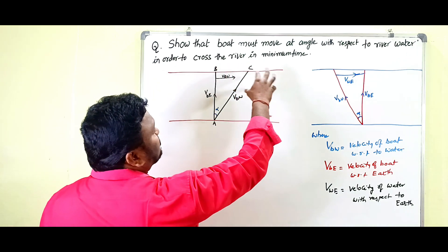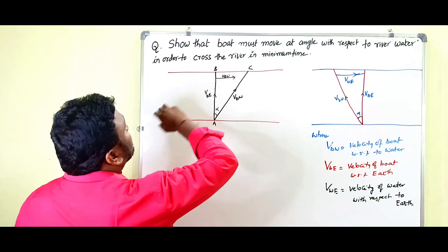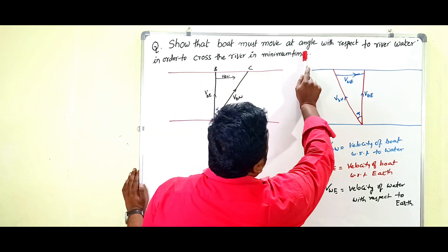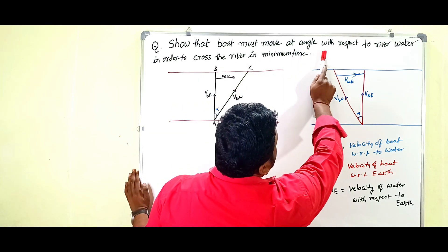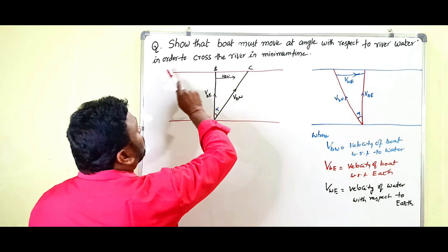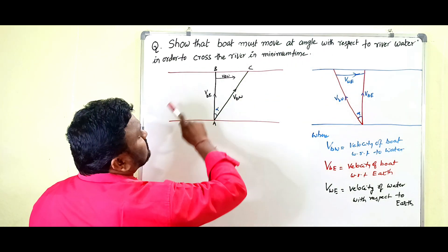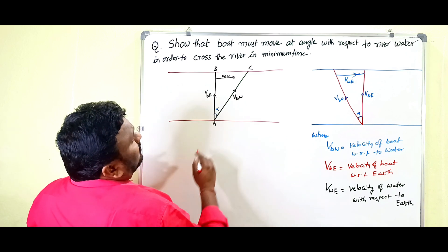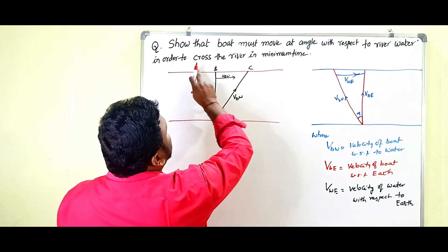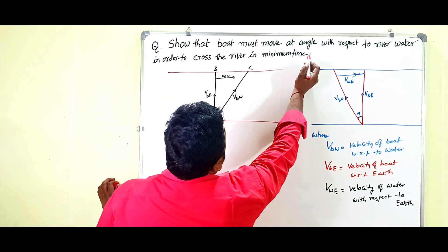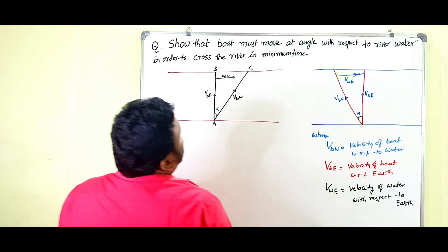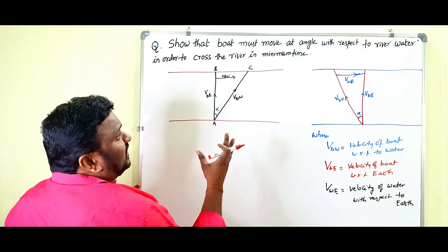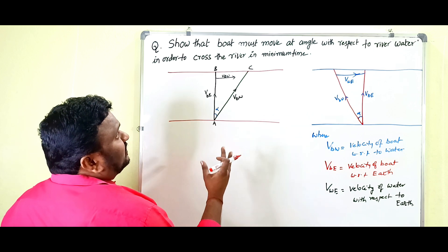The question in the exam should be like this: show that the boat must move at an angle with respect to the river water in order to cross the river in the minimum time. So the boat has to travel from one bank to another bank and we need to find the condition for minimum time.